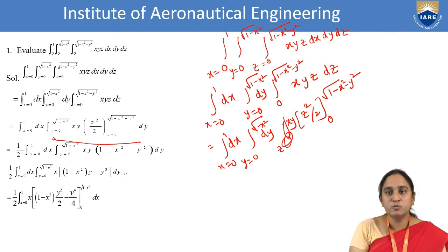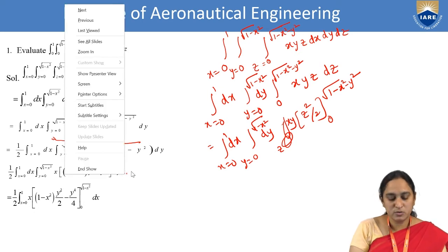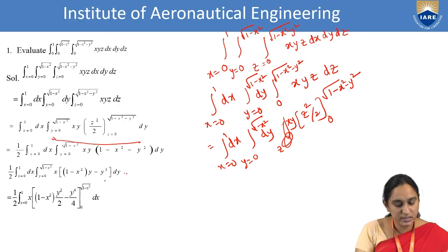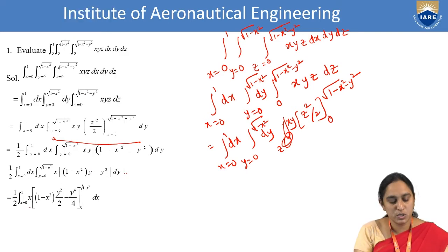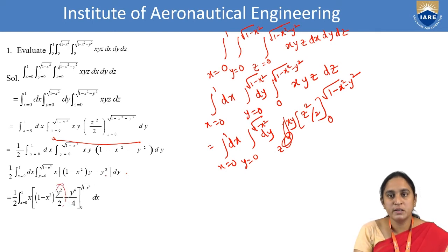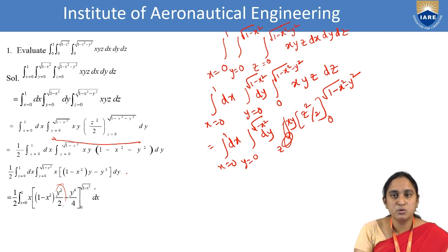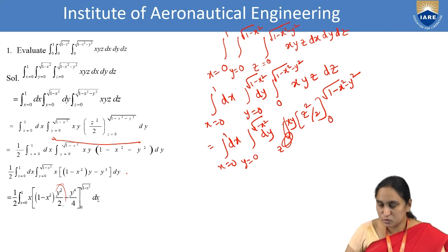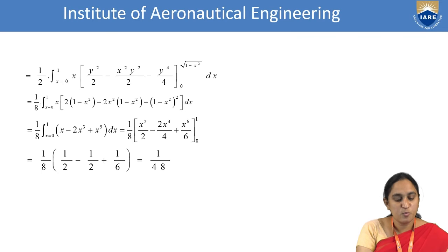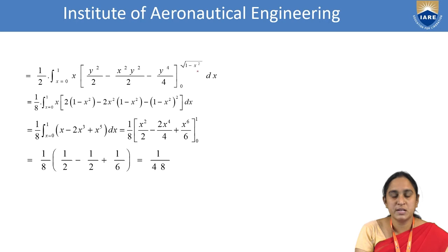Now integrating with respect to y: (1/2) × integral x = 0 to 1 of x·(1−x²) × [y²/2] minus [y⁴/4], evaluated from y = 0 to y = √(1−x²). Substituting the y limits gives: (1/2) × integral x = 0 to 1 of x × [(1−x²)/2 − (1−x²)²/4] dx.